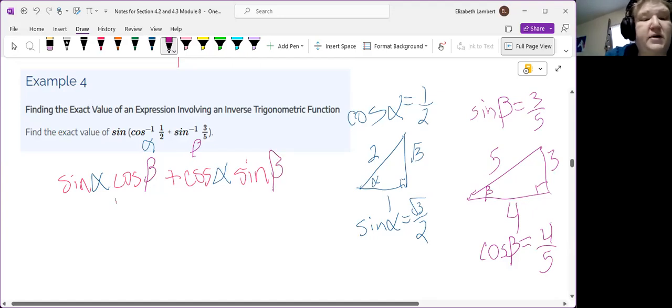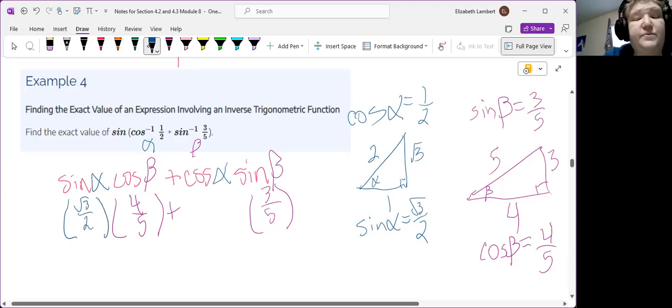All right. So, since I'm on that pen, I'll grab the betas. Cosine of beta is 4 fifths. Sine of beta is 3 fifths. Alpha. Sine of alpha is square root 3 over 2. Cosine of alpha is 1 half.